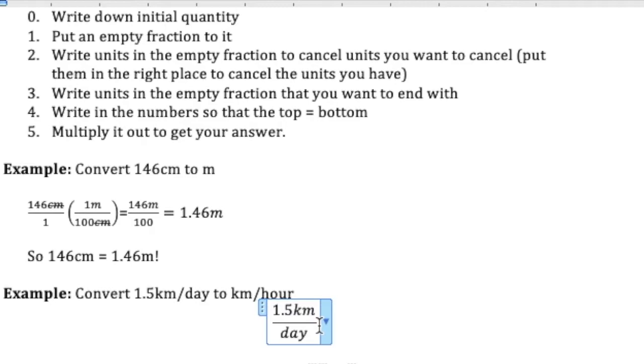Let's try another problem. Let's suppose I see something moving at one and a half kilometers a day. And I want to know how many kilometers an hour that is. So it's a slightly harder conversion, though not that hard. So I write down my initial quantity. And then next to it, I have to put an empty fraction.